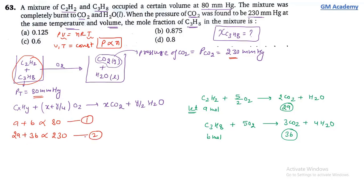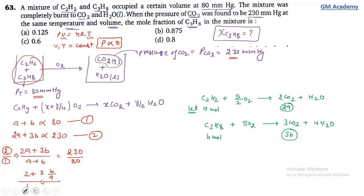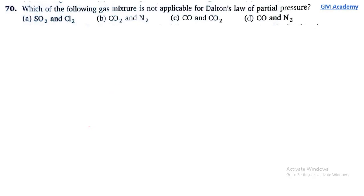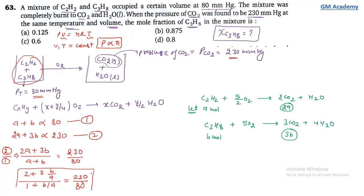Dividing equation 2 by equation 1: (2A + 3B)/(A + B) = 230/80. Solving: 2 + 3B/A = 230/80 × 1, which gives B = 7A.